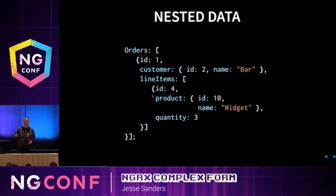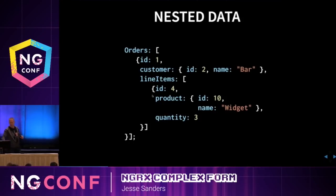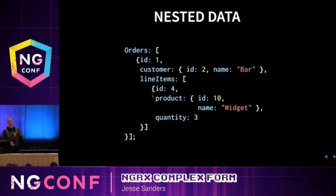The issue that may not jump out immediately is that because of the component architecture and because this data is immutable, if you go to update the product price, it's going to force every component above it — all the way up to order — to re-render. You're replacing the existing state with a new state, which forces a re-render. That's a really bad thing we want to avoid.